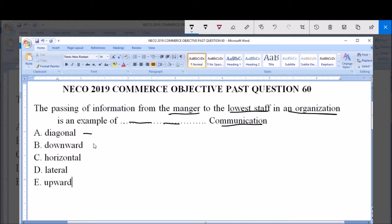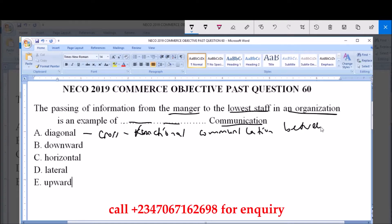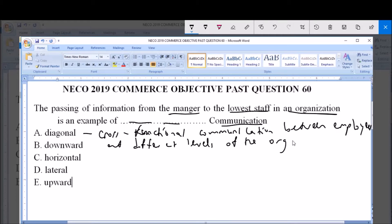So A, which is diagonal, refers to cross-functional communication between employees at different levels of the organization.